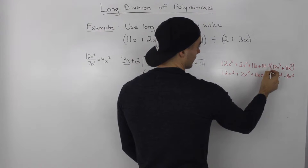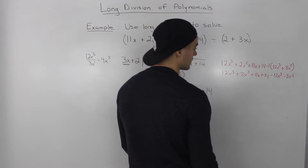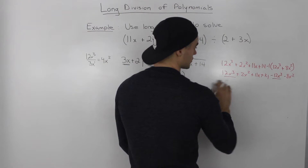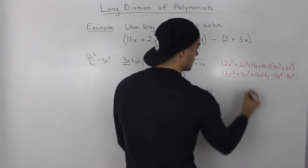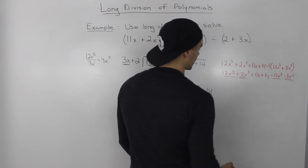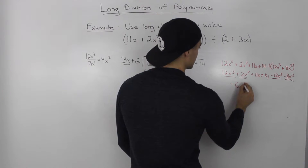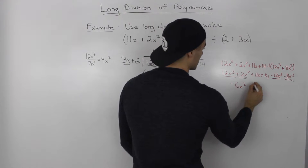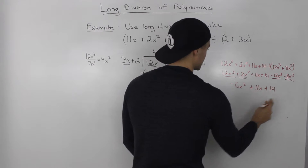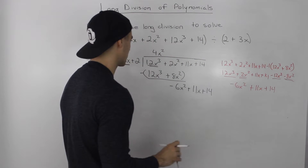We distribute the negative 1 inside: that gives us negative 12x cubed and negative 8x squared. The 12x cubed terms net out to 0. Then 2x squared and negative 8x squared are like terms, giving us negative 6x squared. And we rewrite the 11x plus 14 as is. This result is the same as what we got above.